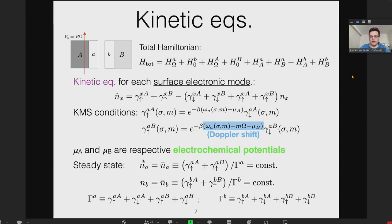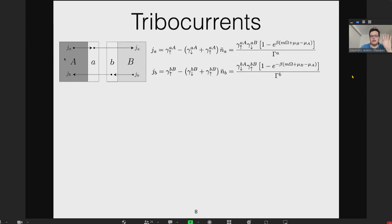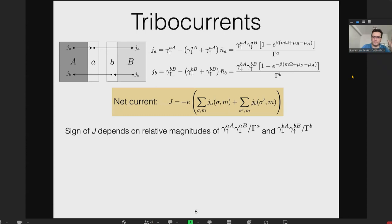We can get currents of electrons moving from one bath to another via the surfaces. We assume the system quickly reaches a steady state in which the population numbers of surface states are not varying. You can write conditions. The thing is, motion induces currents in both directions: electrons moving from A to B and from B to A. These are the expressions for those currents in terms of pumping and damping rates. The net current flow is the sum of those two currents.